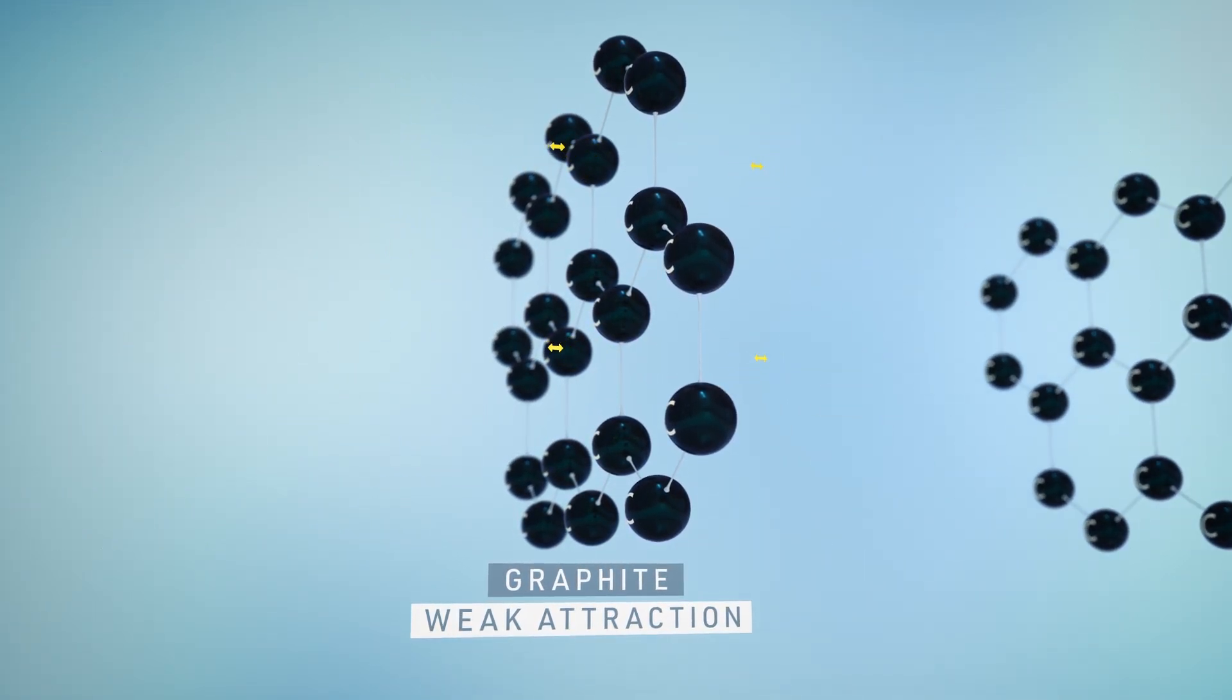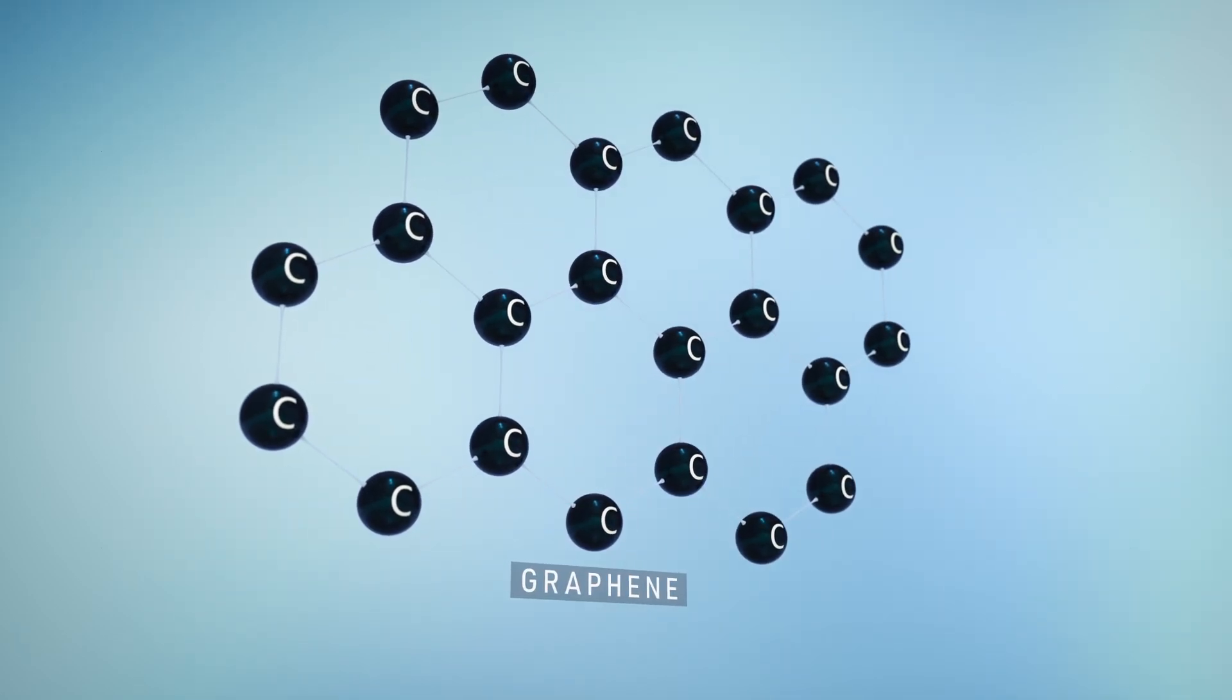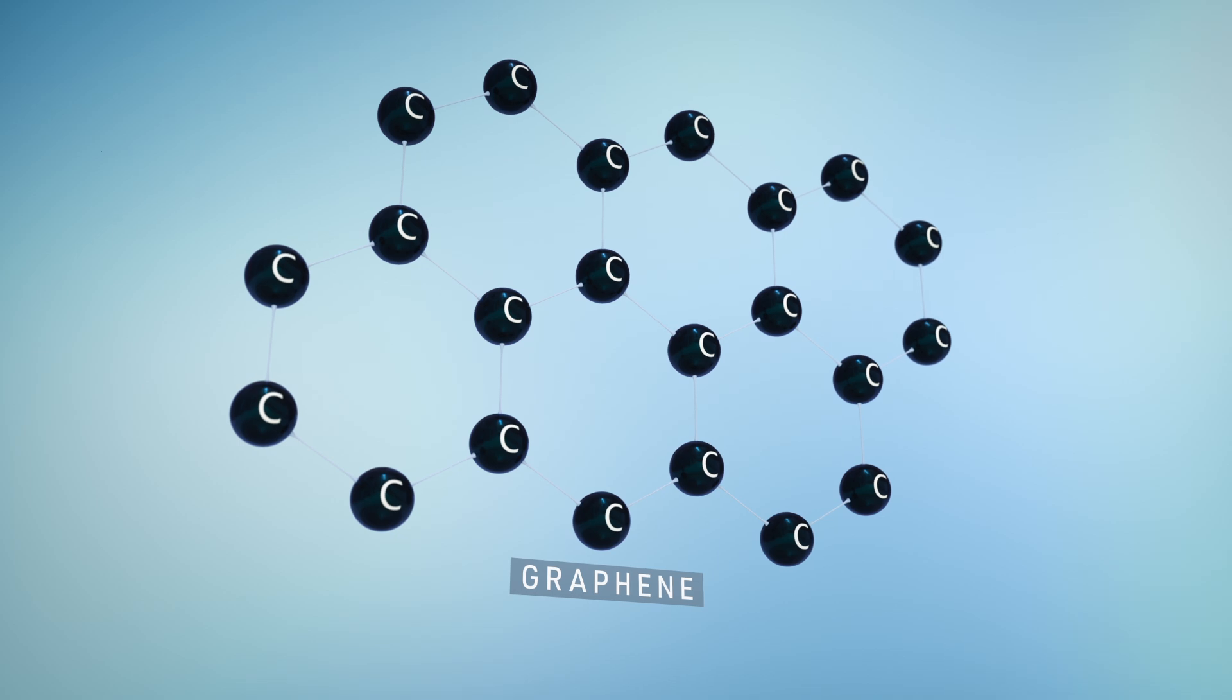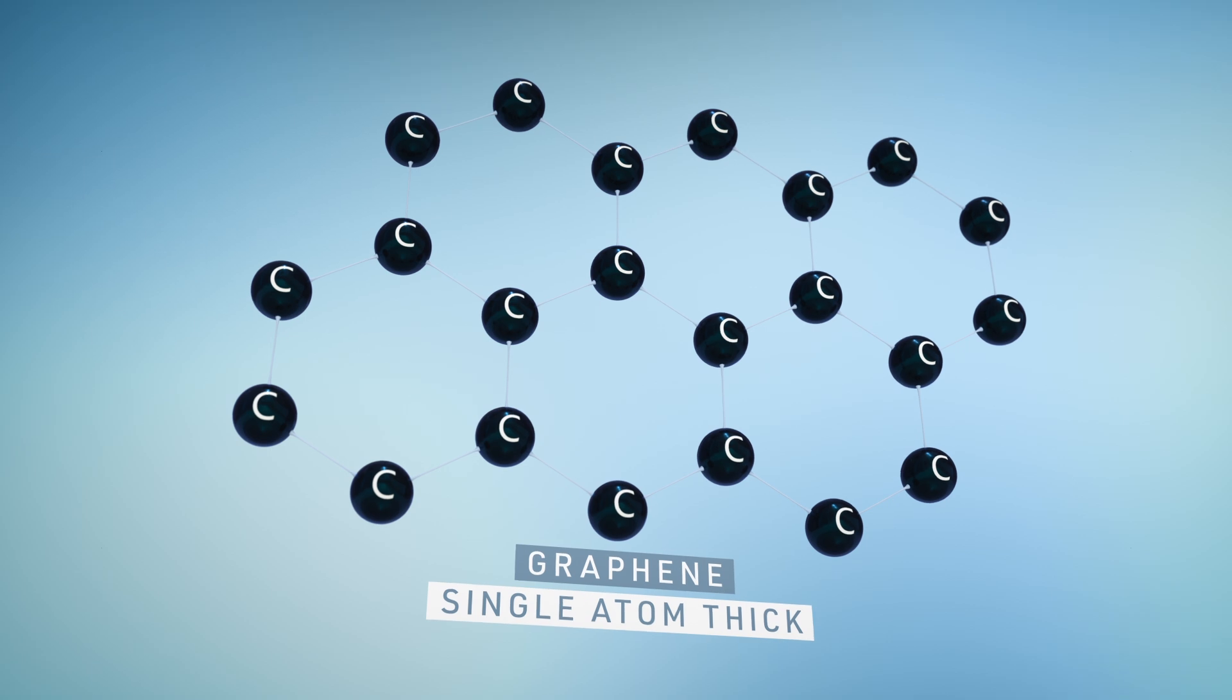If you peel away layers of graphite, you end up with a monolayer honeycomb lattice of graphene, which is a single atom thick, which is why it's known as a two-dimensional material.